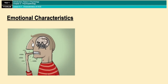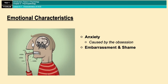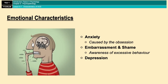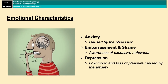Finally, we come to emotional characteristics. The main emotional characteristic is anxiety, which is caused by both the obsession and the compulsive behavior. There is also embarrassment and shame, because people with OCD are often aware of their excessive behavior but also aware of its uncontrollable nature. And then there is depression, which arises due to the inability to experience any kind of pleasure as a result of the all-consuming anxiety.